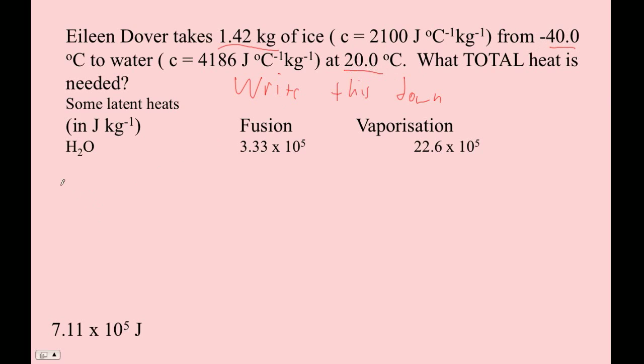So here's what we've got to do. We've got to go from minus 40 to 0, and here it's going to be solid ice. And that's going to be Q as MCAT. And then we've got to go from 0 degrees ice to 0 degrees liquid water. Okay, that's ice to water, to liquid water.